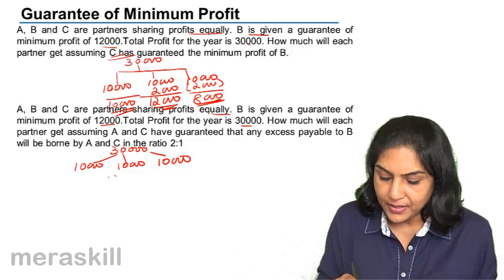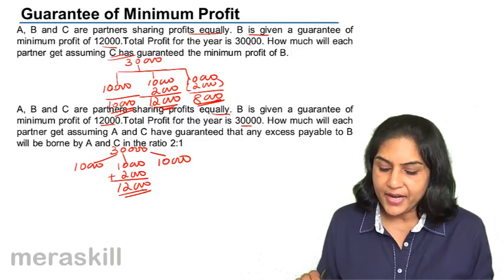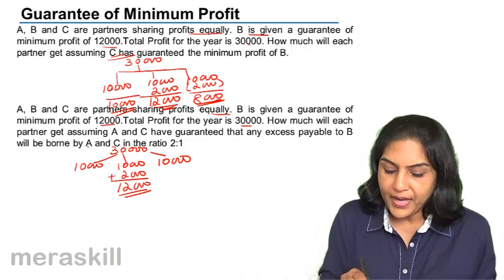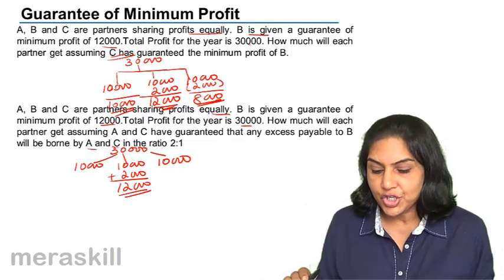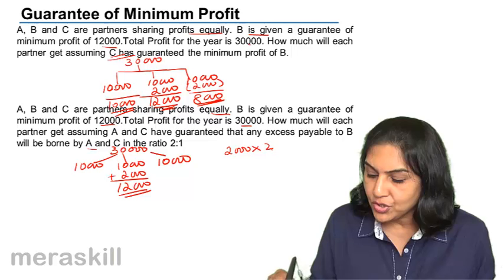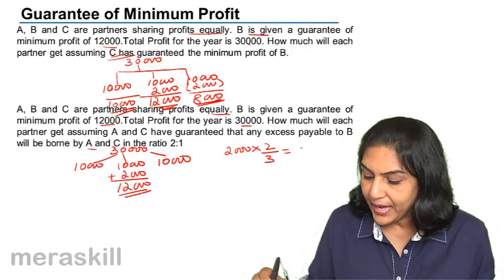But now B has to be given extra 2,000 since he has been guaranteed an amount of 12,000. This 2,000 will be borne by A and C in the ratio 2 is to 1. So 2,000 into 2 by 3 will be borne by A.